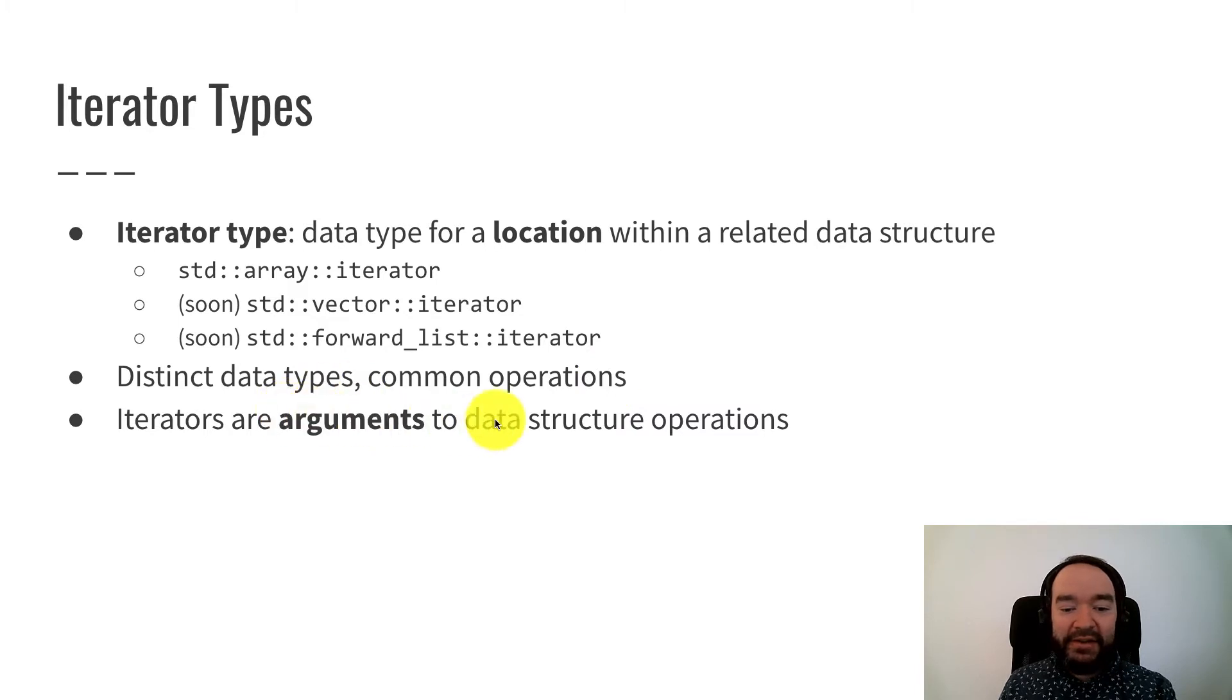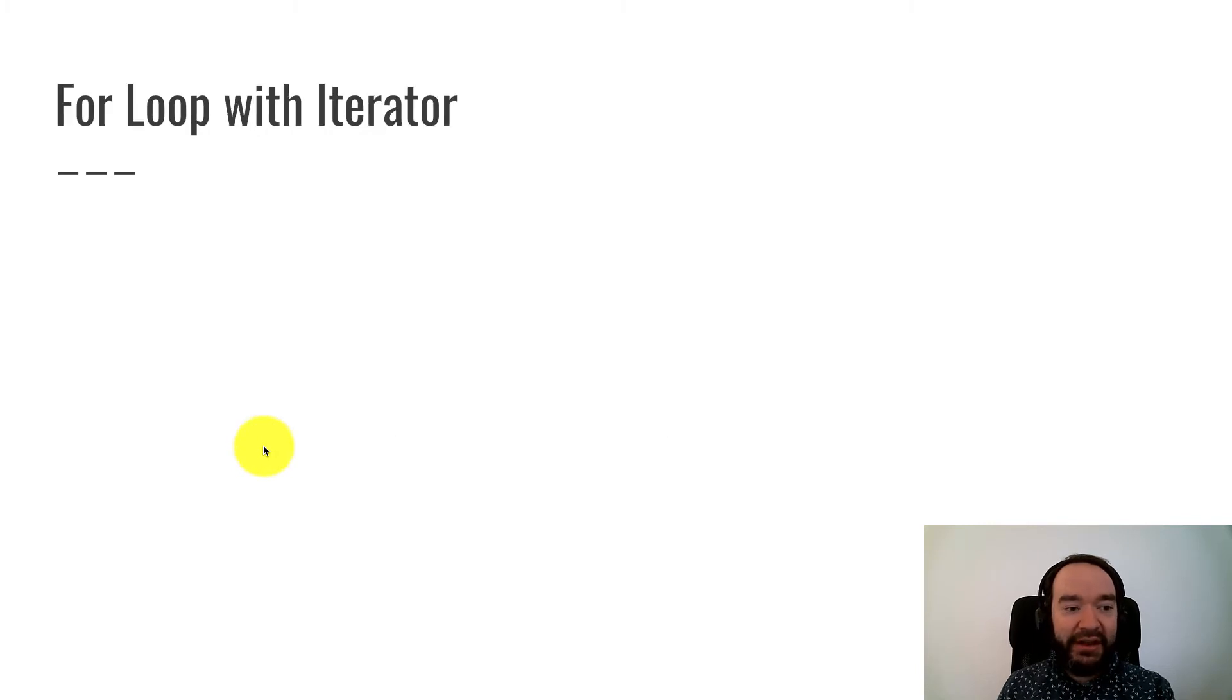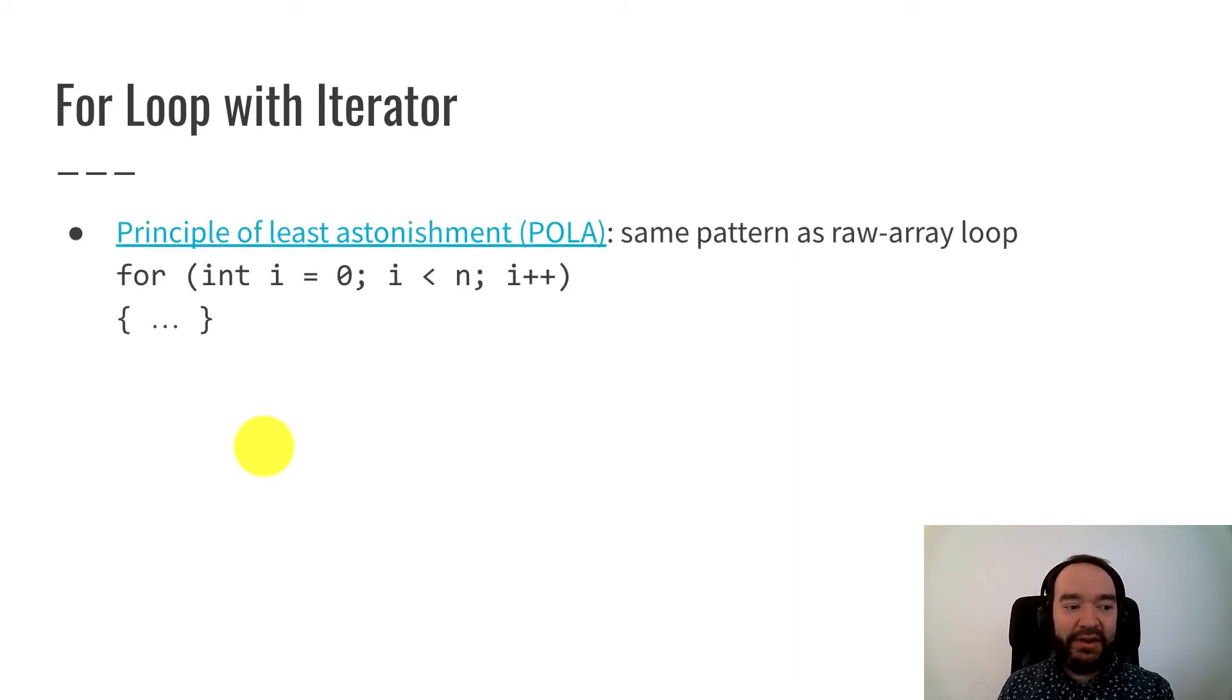Iterators are used as arguments to certain data structure operations. That's a big reason why we're learning about them now. It is true that they're used for loops, but also other high level operations. For example, there's an erase operation that's given an iterator. It's a very convenient member function. If you know the location of an element you want to remove, you can just make this one function call and remove it. So in high level programming, it makes our lives easier when we can call these kind of functions. In order to do that, we have to know how to create iterators and use them. For now, we're focusing on for loops just to get started with iterators.